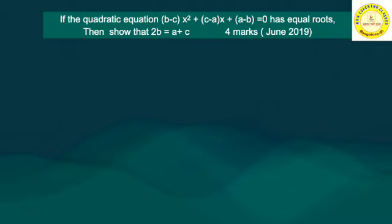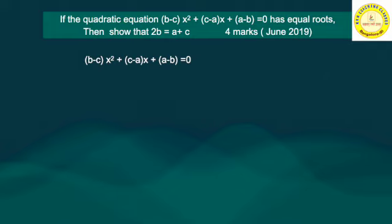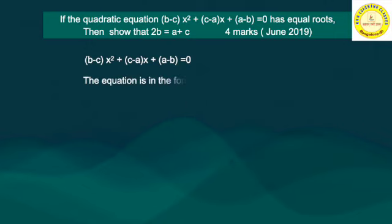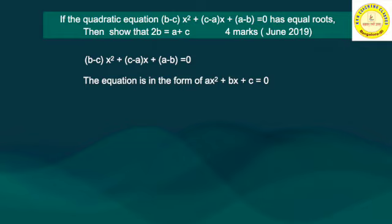This is an application type of question. First, write the equation: (b minus c)x² plus (c minus a)x plus (a minus b) equals 0. We can easily see this is in the standard form ax² plus bx plus c equals 0, which is the standard form of the quadratic equation, where a, b, c are real numbers and a is not equal to 0.